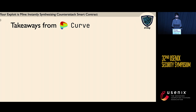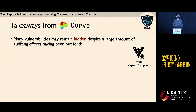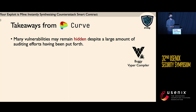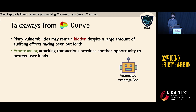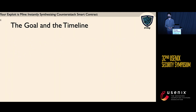So what can we learn from this Curve attack? First of all, many vulnerabilities remain hidden even while a lot of security auditing effort has been applied — the bug in the Viper compiler is a record example. No one can guarantee there is no bug or weakness in the whole supply chain. On the other hand, front-running attacking transactions seems to provide another opportunity to protect user funds. Based on these two takeaways from the Curve attack, we present the goal of counter-attack and its development timeline.